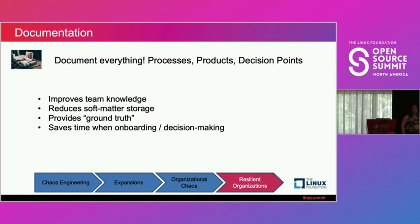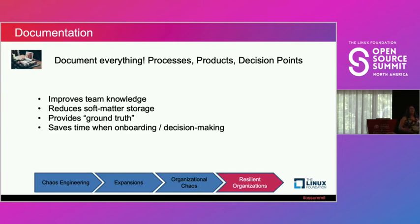Documentation reduces soft-matter storage — organizational knowledge carried around in people's brains. With the Great Resignation and people jumping jobs more frequently, you can't let people carry undocumented knowledge. It provides that ground truth, and when bringing new people in it saves a lot of onboarding time. Part of their incoming tasking can be reading that documentation. As they read it and have questions, they can ask their assigned peer or mentor and update the documentation with answers — a continual revision process. This makes the whole team more efficient because an experienced person doesn't have to stand side-by-side with every new hire the whole time, making them self-sufficient much more quickly.